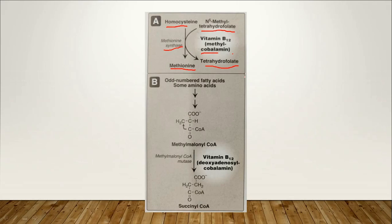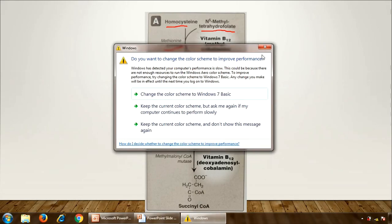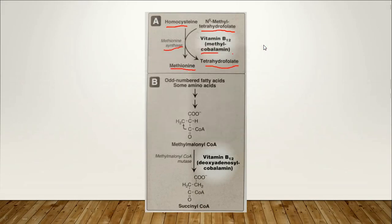There are degenerative changes of the posterior and lateral columns of the spinal cord, resulting in neurological disturbances — hyperactive reflexes, ataxia, and paralysis. These are very dangerous kinds of vitamin B12 deficiency, in terms of the clinical aspects.